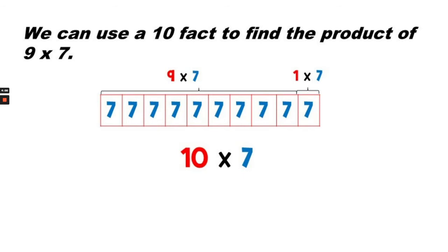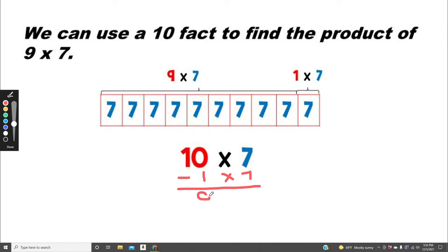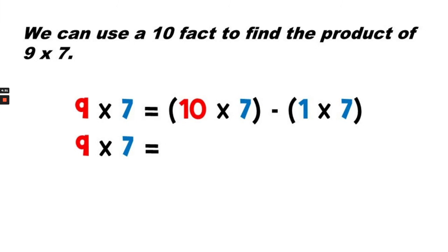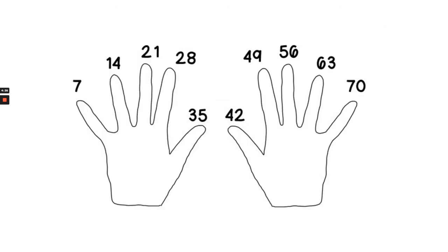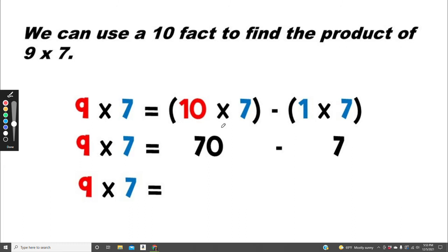We can use a 10-fact to find the product of 9 times 7. We know that 10 times 7 equals 70. So 9 times 7 equals 70 minus 7, and that would be 63.